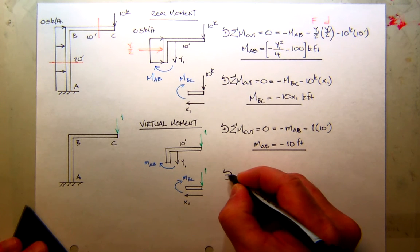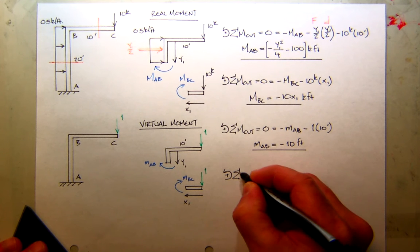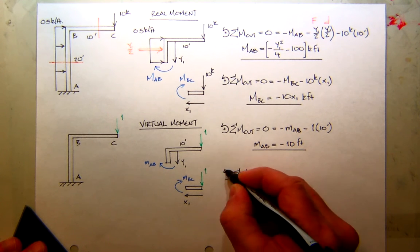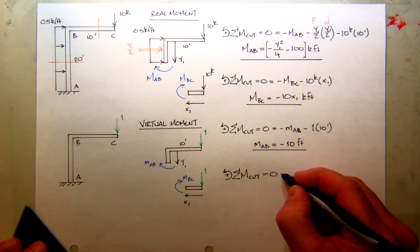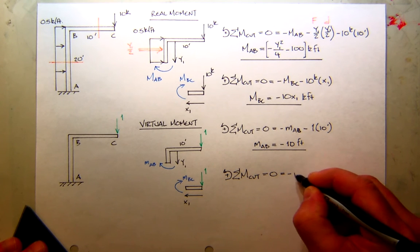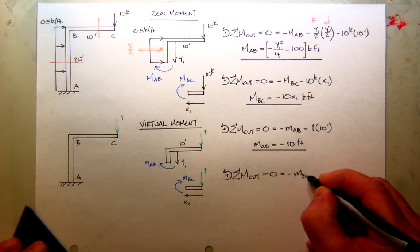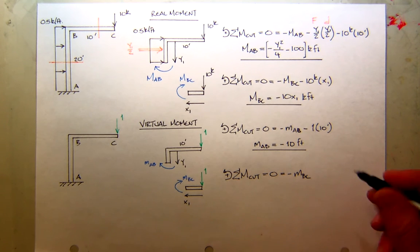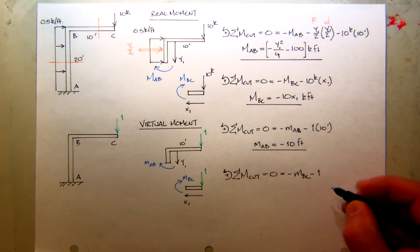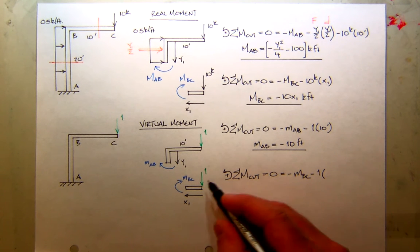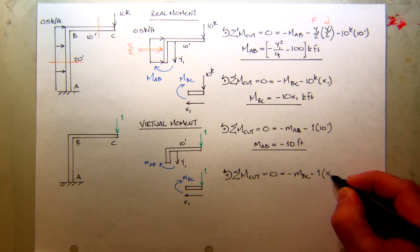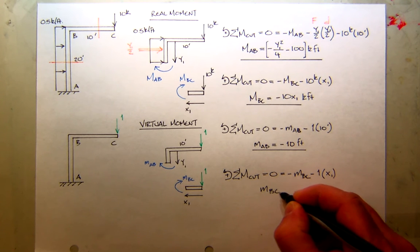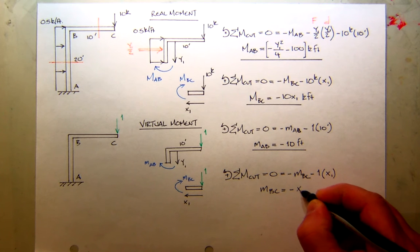So again, I'll just sum moments. Sum moments at the cut. Assume right-hand rule. Make sure everything's in equilibrium. So what do I have? Well, my virtual moment is negative, according to my sign convention. And also, the virtual load is also creating a negative moment about the cut. And have a force of 1 and a distance of X1. So my virtual moment in BC is going to be negative X1.